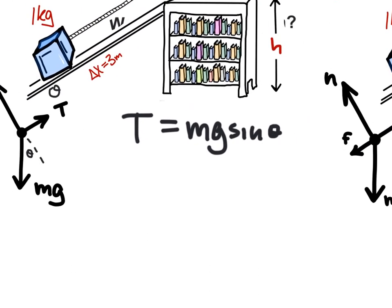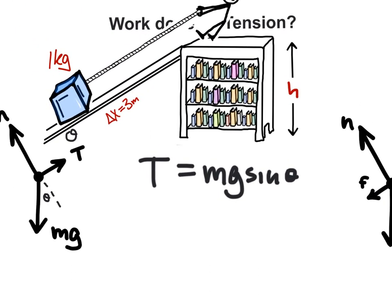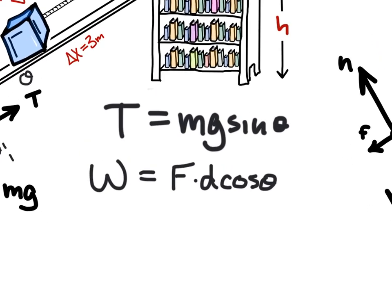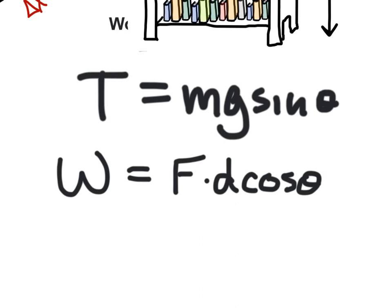So the work done by tension is now going to be the product of force and displacement times the cosine of theta. Now importantly that theta is not the same theta as the angle of the ramp.